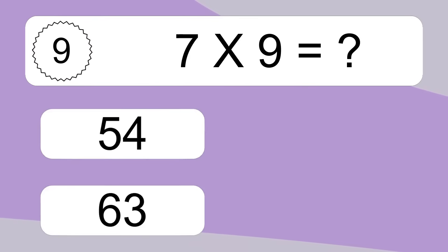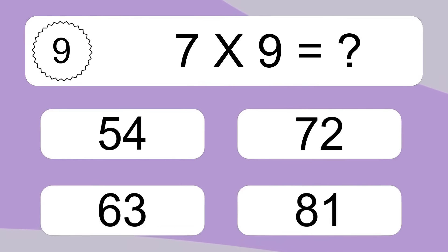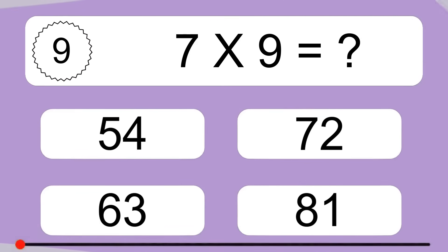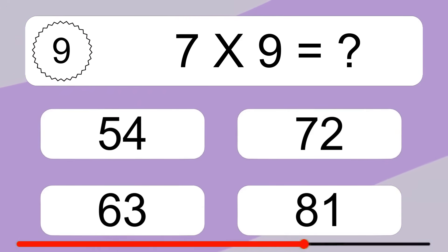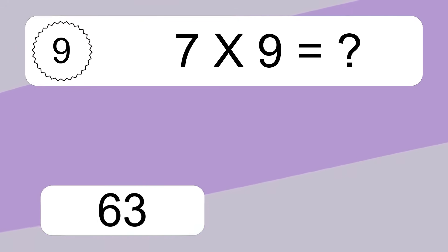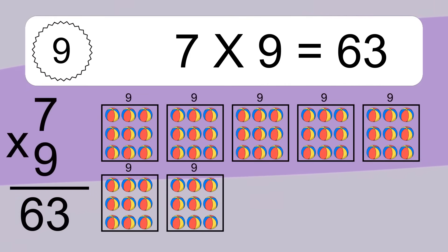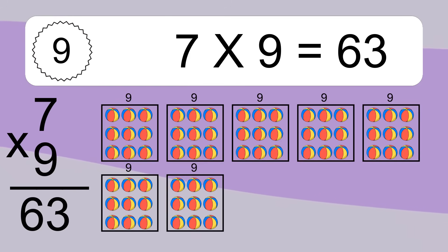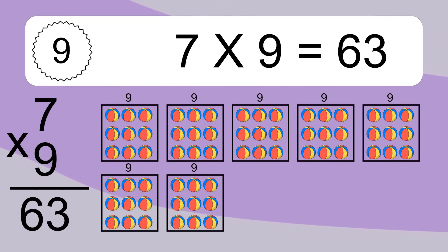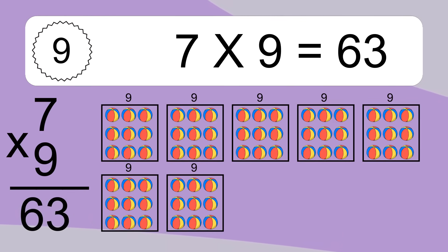7 times 9 equals what? 7 times 9 equals 63. We have 7 boxes and each box has 9 colorful balls inside. If you count all the balls in all the boxes together, you will have 7 times 9 balls. This equals 63 balls.